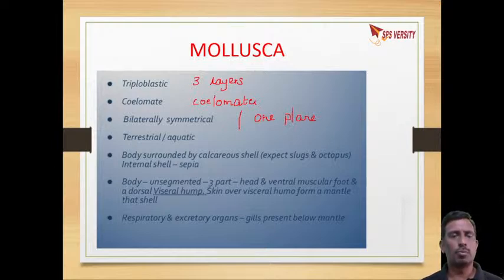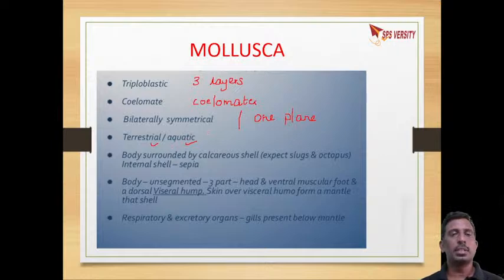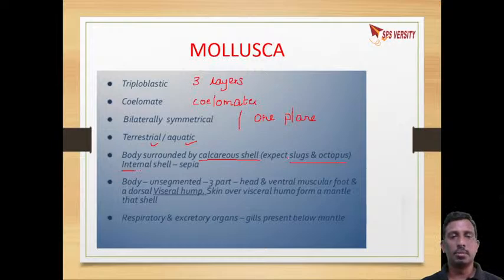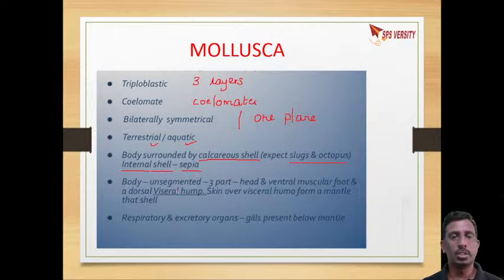There are both terrestrial as well as aquatic forms. The molluscan body is surrounded by a calcareous shell, except in a few organisms like slugs and octopus. In some organisms like Sepia, there is an internal shell. The body is not divided into segments but is divided into three parts: head, ventral muscular foot, and dorsal visceral hump.